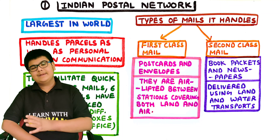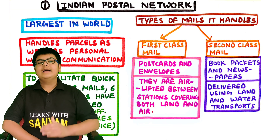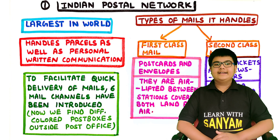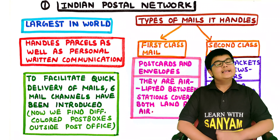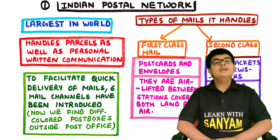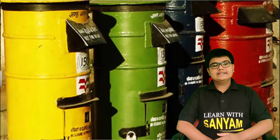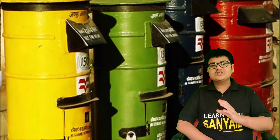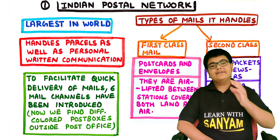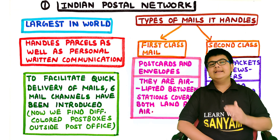For the second class mail, the Indian Postal Network uses water and land transport. To facilitate quick delivery of mails, six mail channels have been introduced. Nowadays if we go to a post office, we will find different colors of post boxes, which represents the different mail channels introduced by the Indian Postal Network.